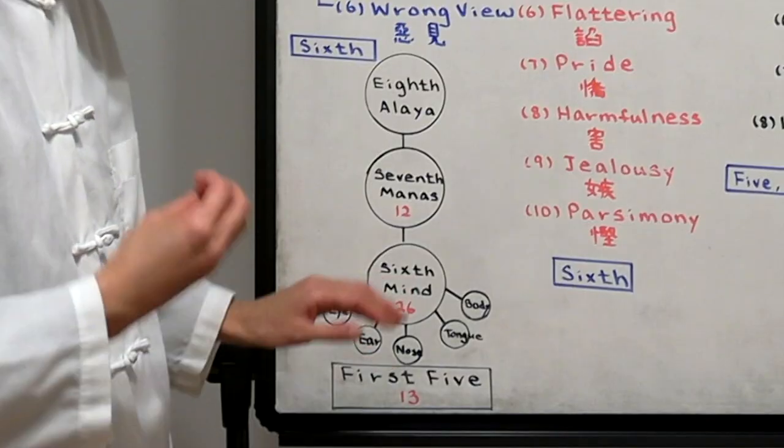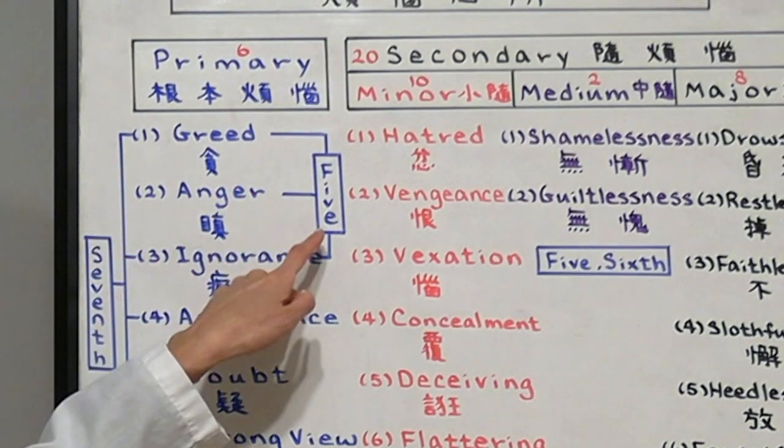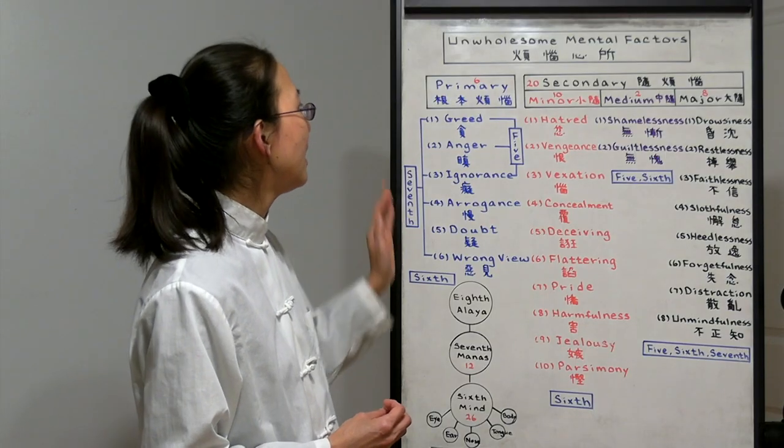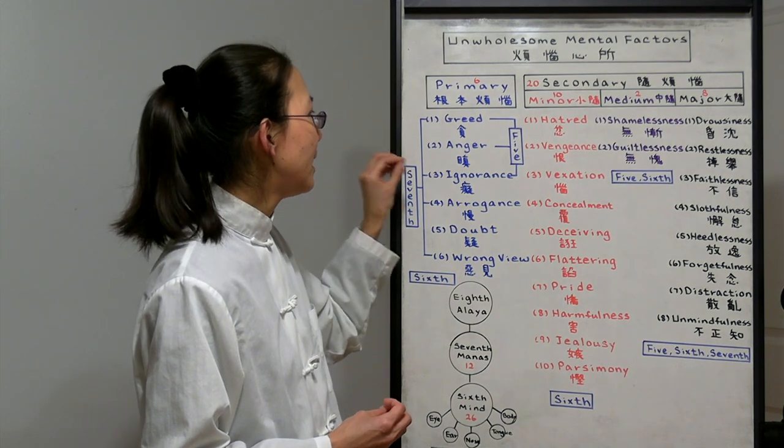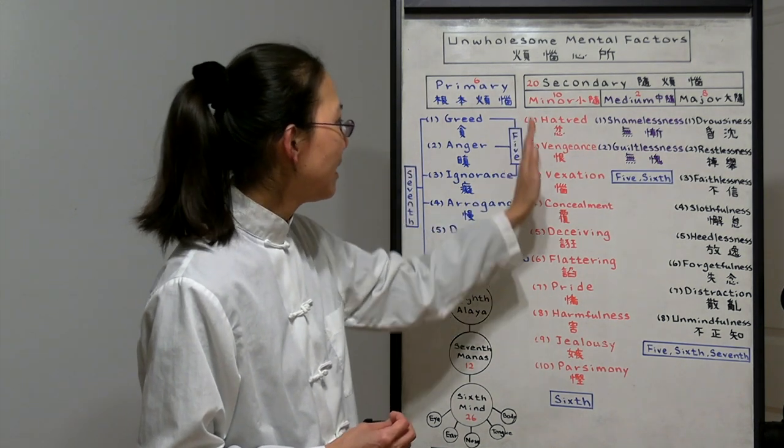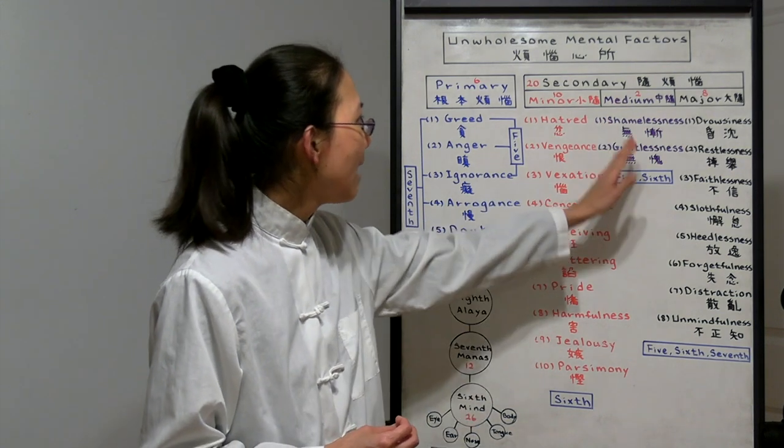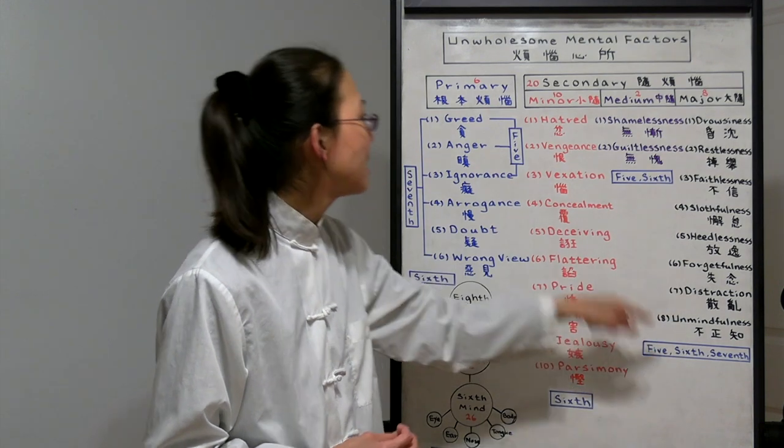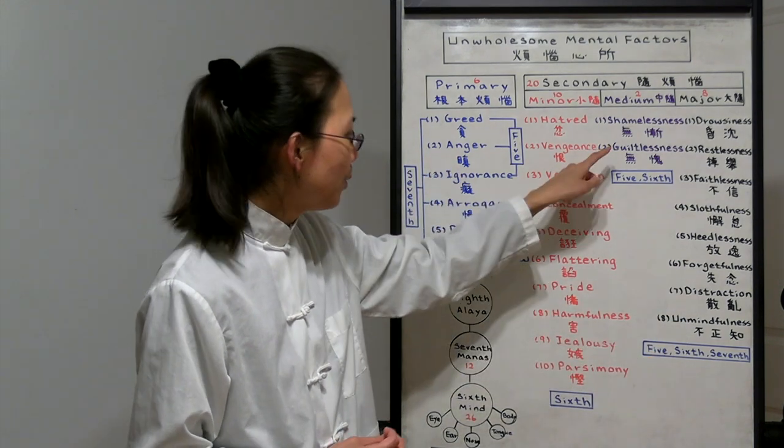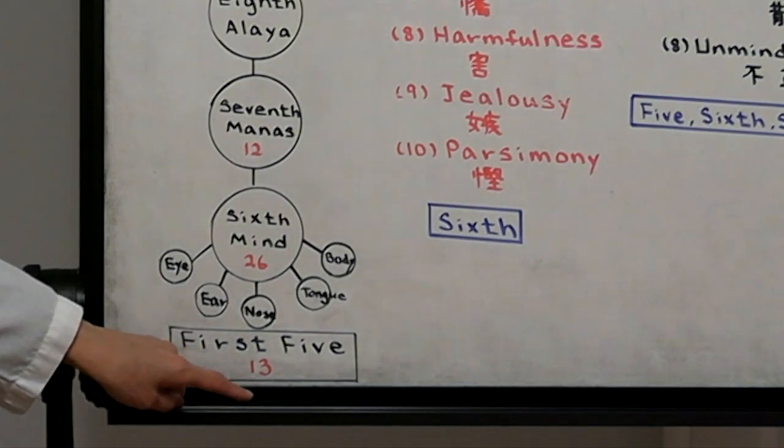The first five consciousnesses, they only have greed, anger and ignorance. Out of the six primary, they are only capable of greed, anger and ignorance. They don't have any of the minor unwholesome mental factors. They have the two medium ones and they have the eight major ones. So three plus two plus eight, together it has 13 out of the 26.